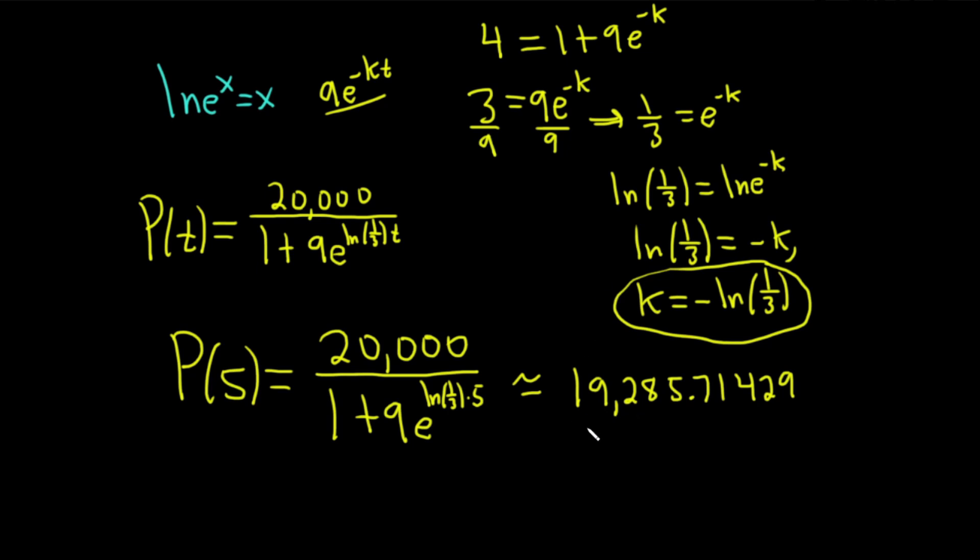If you put this in your calculator, you get approximately 19,285.71429. At this point, you would want to round. You're not quite at 19,286 people, so I'm going to say 19,285. You could round up if you wanted to. A little bit more time and we'd be at 19,286, so either answer would probably be fine.